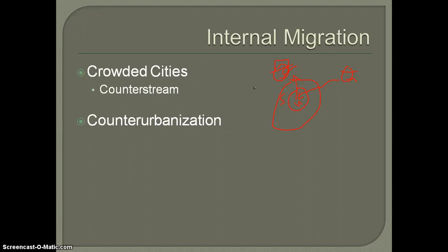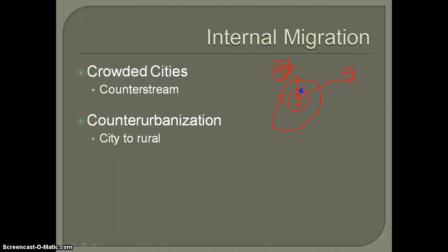With the crowded cities, this would eventually create a counterstream. A lot of it's your wealthier people that begin to move out first. Over time, middle-class folks are going to begin to move out also, because they now have enough money. They can move out to the suburban areas, they want to raise their families there. Then eventually we begin to see counter-urbanization — people moving not just from urban areas but also suburban areas back out to the rural spaces, for more space and country living.